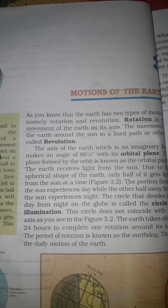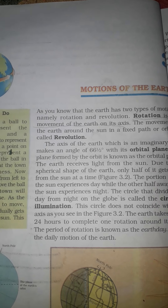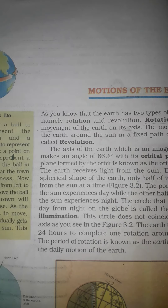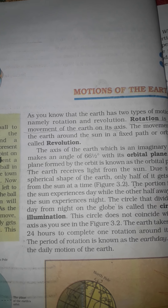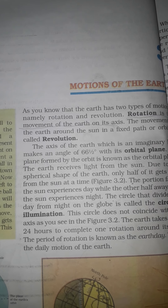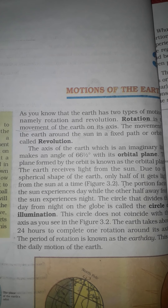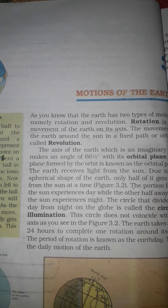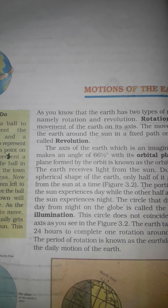As the name of the chapter suggests — Motions of the Earth — you know that our earth is always in motion. It always revolves, it always rotates. Earth has two types of motions: one is rotation and the second one is revolution. Rotation is the movement of the earth on its axis, and the movement of the earth around the sun in a fixed orbit is called revolution. I gave you notes in Class 5 also on the topic of rotation and revolution.